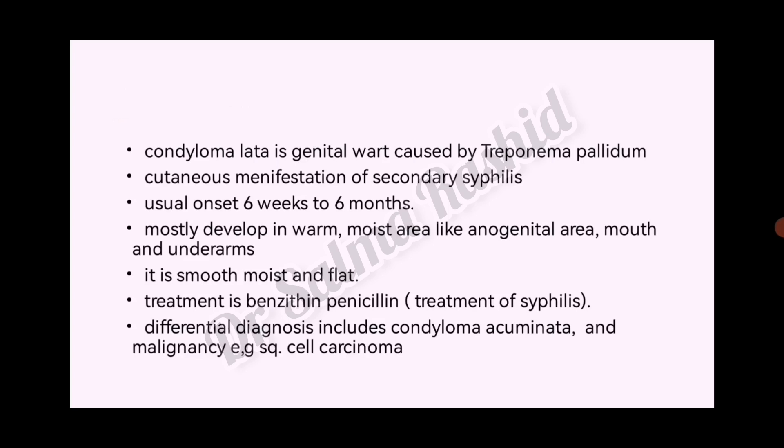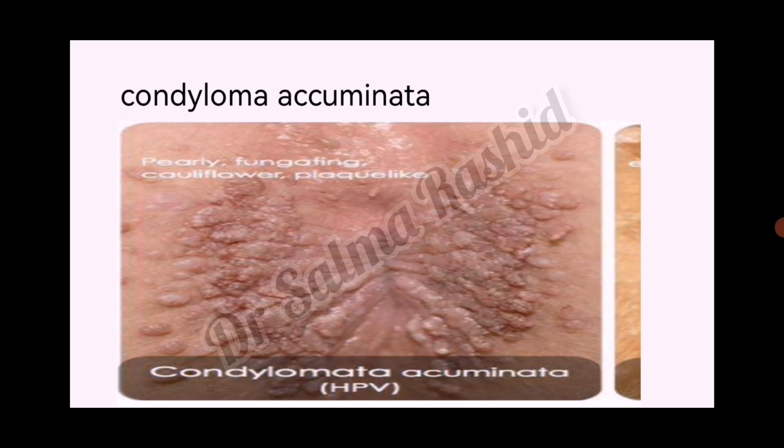It mostly develops in warm moist areas like the anogenital area, mouth, and underarms. It is smooth, moist, and flat. Treatment is benzathine penicillin, as the treatment of syphilis. Differential diagnosis includes condyloma acuminatum and malignancy such as squamous cell carcinoma.